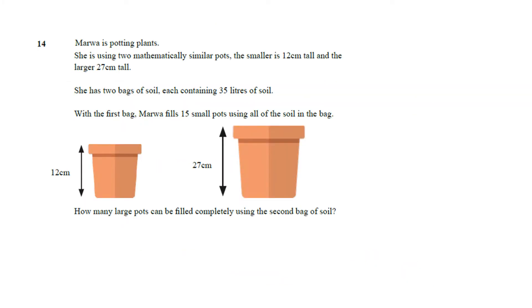Now let's understand another question. Marwa is potting plants using two mathematically similar pots. From smaller to larger, make the ratio and find the scale factor: 12 over 27, which simplifies to 4 over 9, since both heights are given in cm.